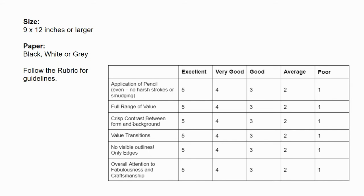Crisp contrast between your form and your background — we don't want it to all be even tone. Value transitions: think about in that sphere how those subtle changes we did, it wasn't stark. It was a real subtle transition. A lot of times in our elements that we draw, there's not stark transitions. So those value transitions are what we're looking for — observing whether they are stark or subtle.